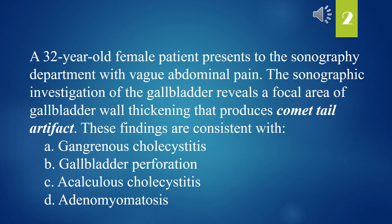A 32-year-old female patient presents to the sonography department with vague abdominal pain. The sonographic investigation of the gallbladder reveals a focal area of gallbladder wall thickening that produces comet tail artifact. These findings are consistent with: A. Gangrenous cholecystitis. B. Gallbladder perforation. C. Acalculus cholecystitis. D. Adenomyomatosis. The answer is D. Adenomyomatosis.